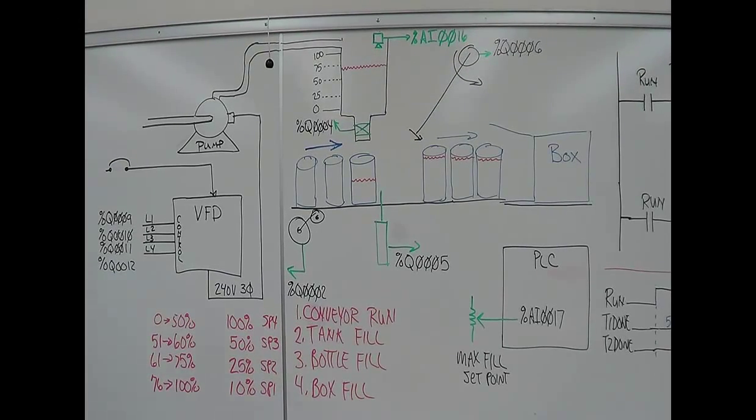Okay, let's look at the pump and this is your set point. If the tank is 0 to 50% full, you're running the pump at speed 4, which would be 100% speed.